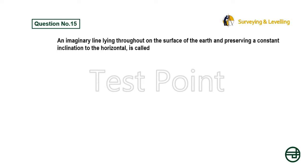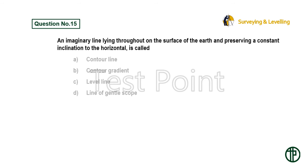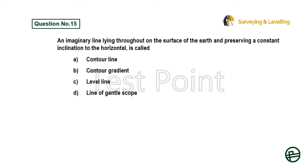Question 15: An imaginary line lying throughout on the surface of the earth and preserving a constant inclination to the horizontal is called — Option A: Contour line. Option B: Contour gradient. Option C: Level line. Option D: Line of gentle slope. Answer is Option B: Contour gradient.